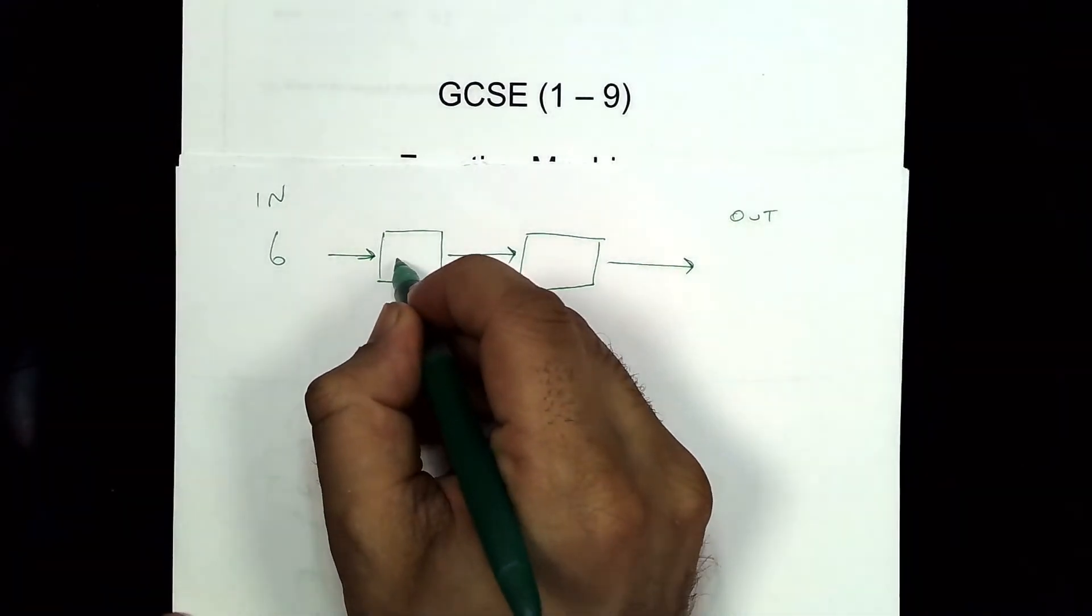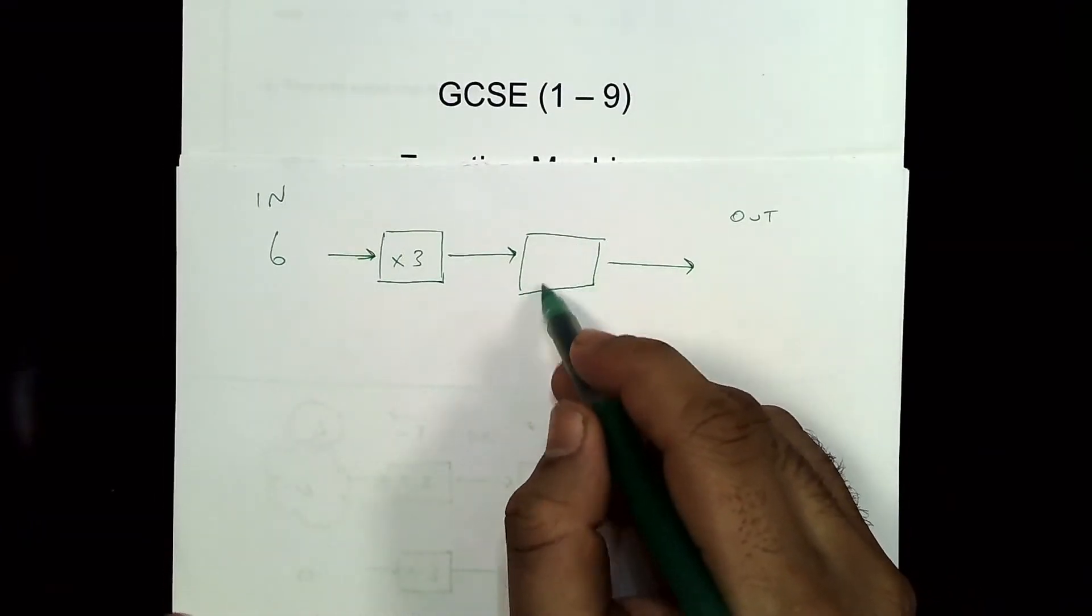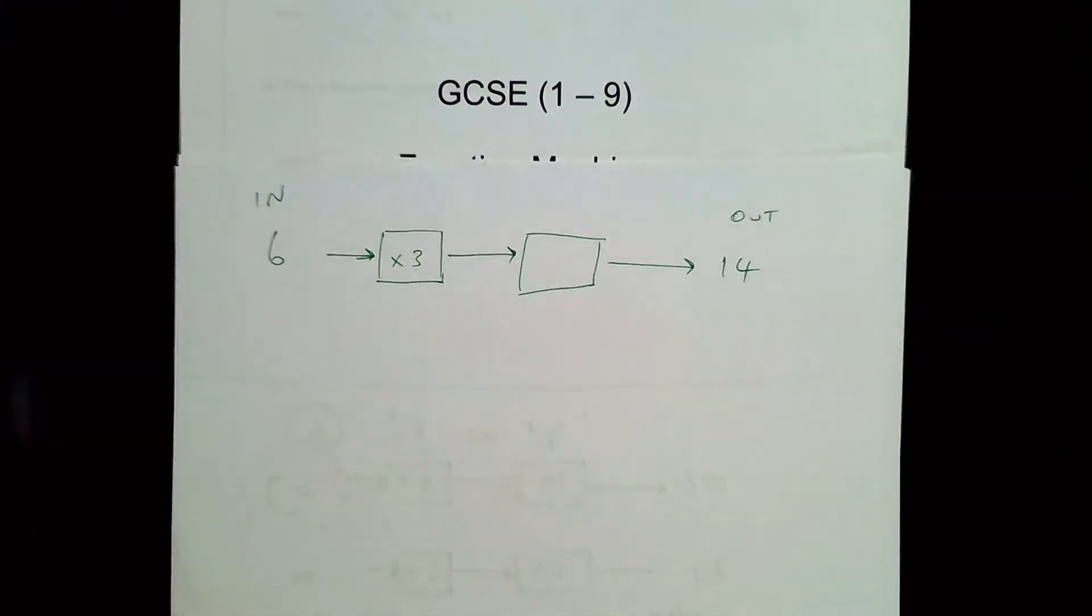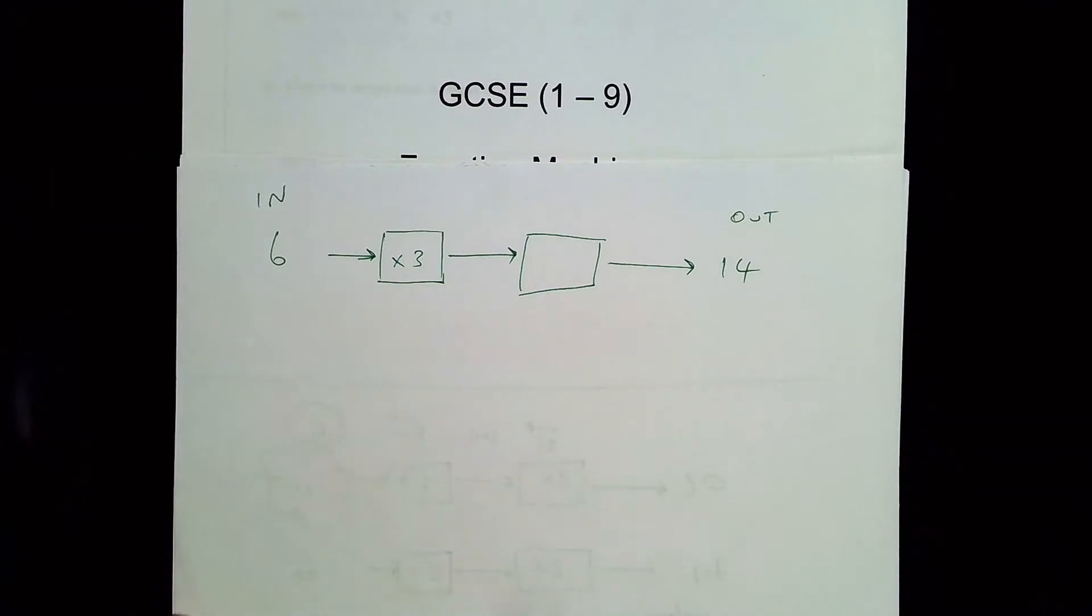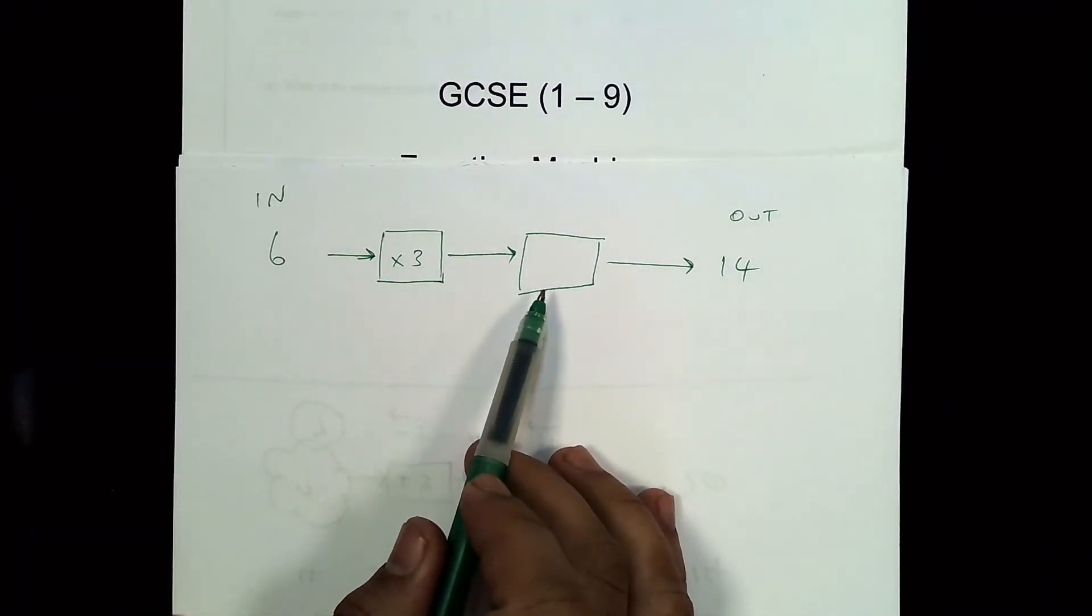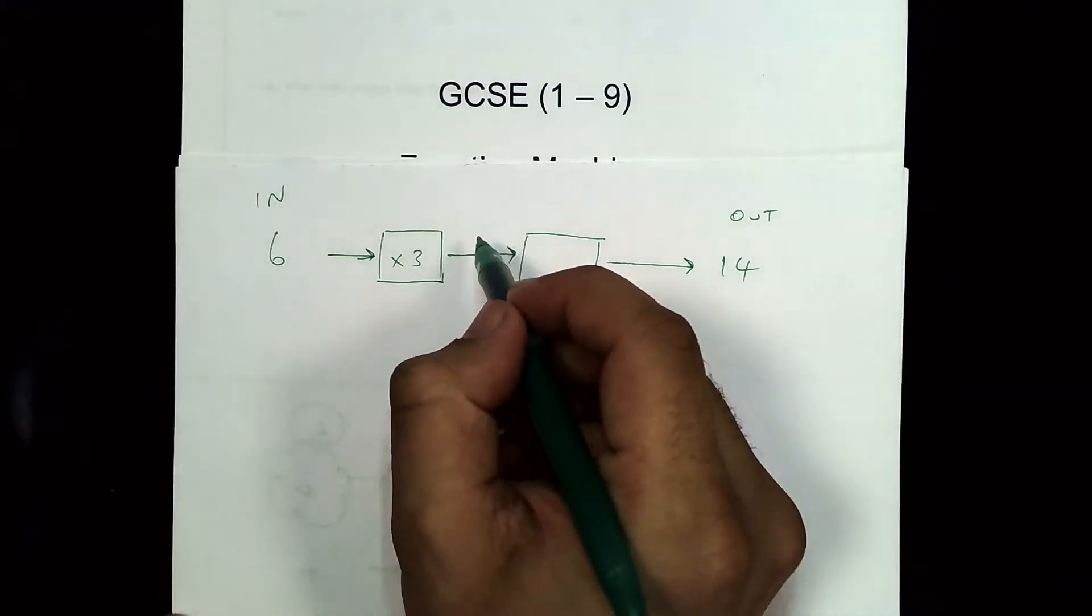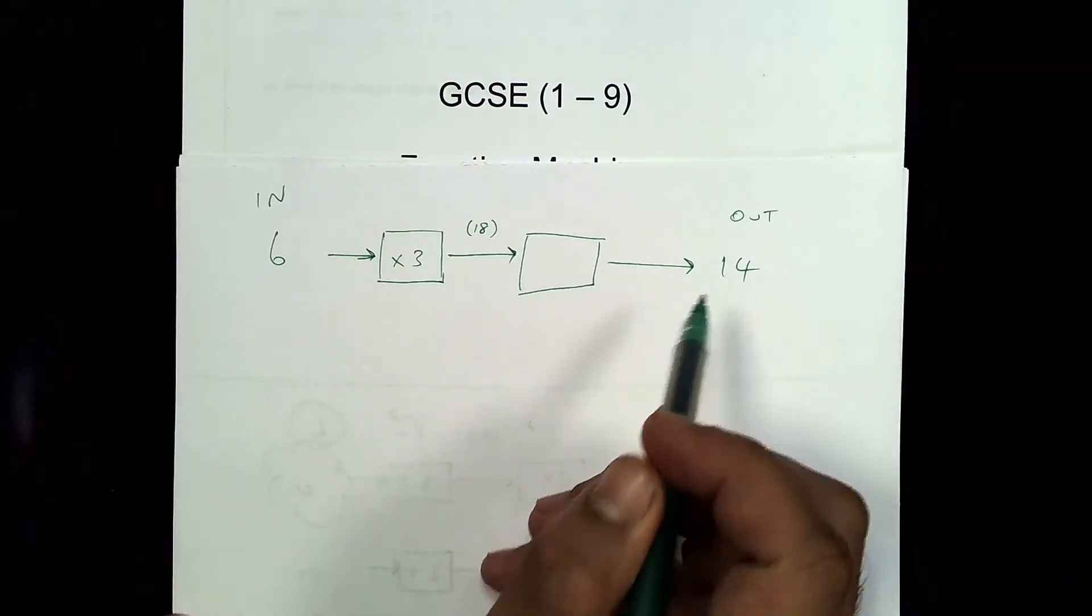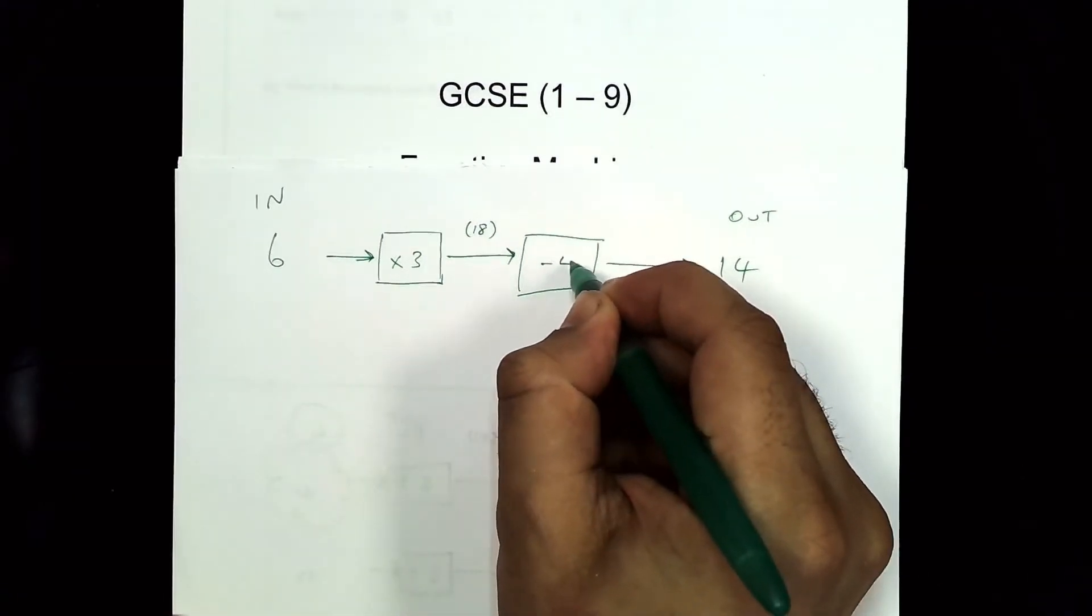I times it by 3, and then something else happens, and the answer I get is 14. So what you then have to do is work out what the second part of the operation is. So 6 times 3 is 18. 18 something makes 14. So what do you have to do? If I'm at 18 up to this stage, what do I have to do to 18 to make it into 14? And the simplest answer is you can subtract 4.